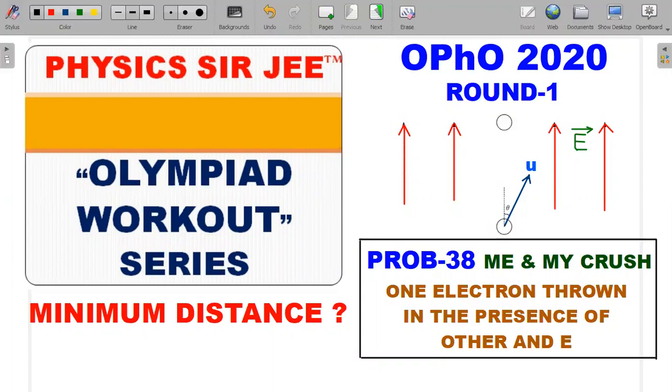This is problem number 38, "Me and My Crush," the funny title for the problem. It's actually about two electron interaction with one electron thrown in the presence of the other, and also there is a uniform electric field external one that is present.